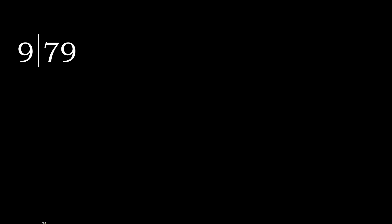79 divided by 9. 7 is less, therefore next. 79 is not less, therefore with 79. 9 multiplied by which number is nearest to 79 but not greater.